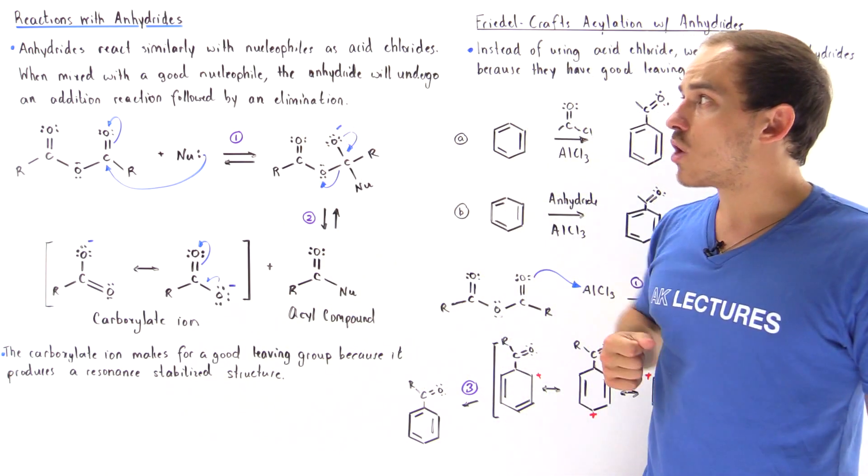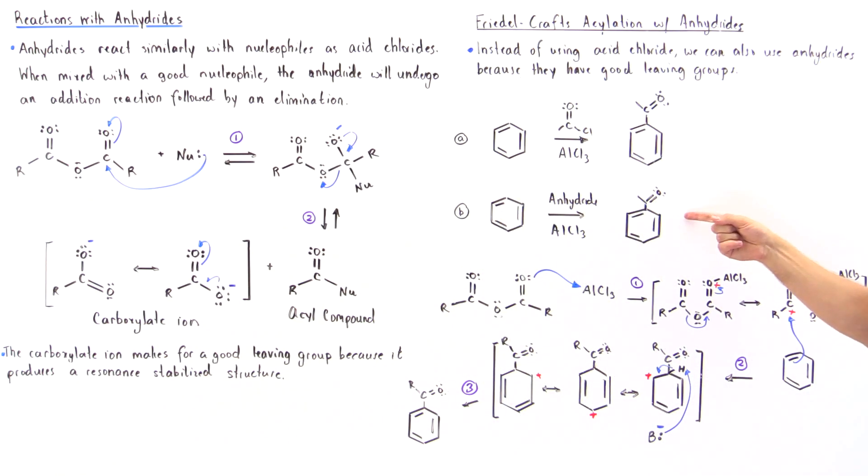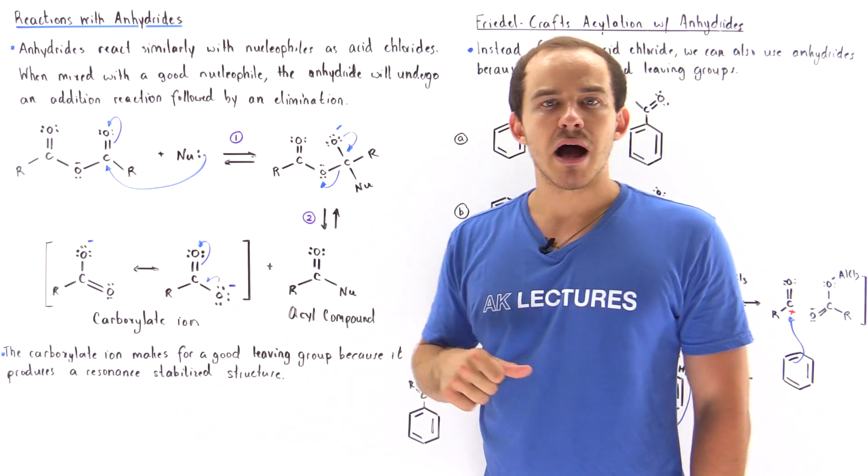So the anhydride is a very useful reactant when we're trying to form our monosubstituted benzene rings from simple benzene molecules.